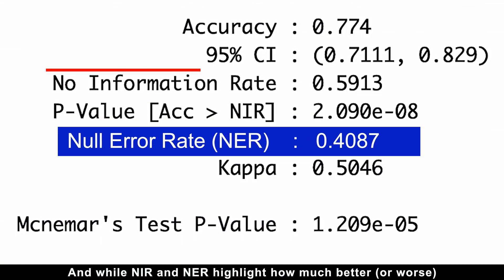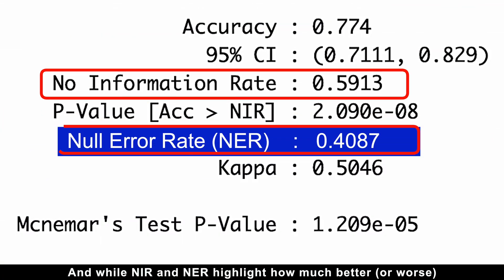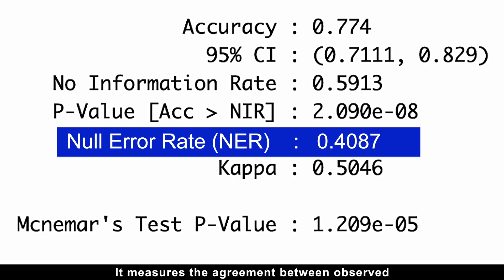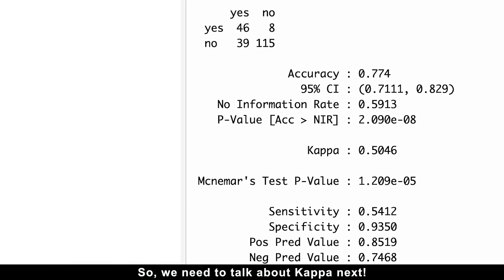And while no-information rate and null error rate highlight how much better or worse your model is compared to a naive baseline, the Kappa statistic goes one step further. It measures the agreement between observed and predicted classifications. So we need to talk about Kappa next.